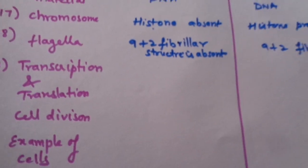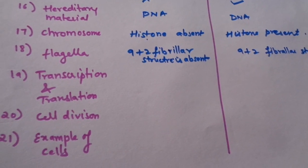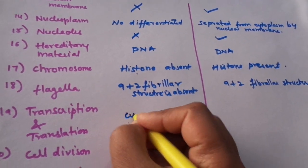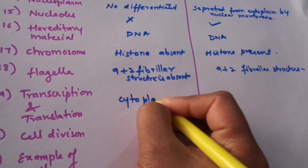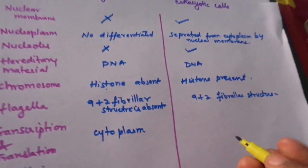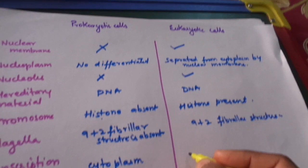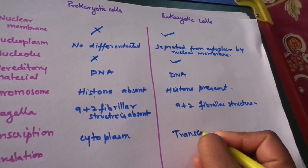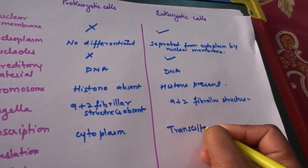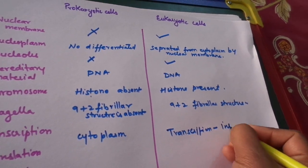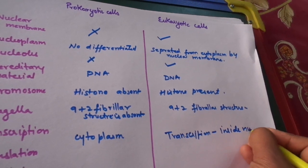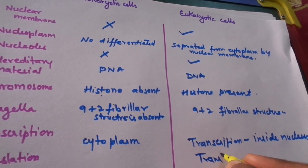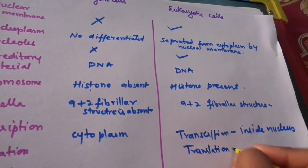The next major point is transcription and translation. In the case of prokaryotic cells, both transcription and translation occur in the cytoplasm. However, in eukaryotic cells, transcription occurs inside the nucleus and the translation process occurs in the cytoplasm.